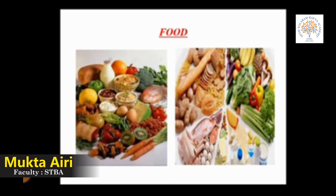Food is something that people or animals eat to survive. Food is an essential part of our life. It gives us energy and nutrients to grow so we can be healthy and active. There are different kinds of food and each food contains different substances. These substances are called nutrients. Nutrients are the substances that provide us energy for activity, growth and all functions of the body such as breathing, digestion and many other functions.